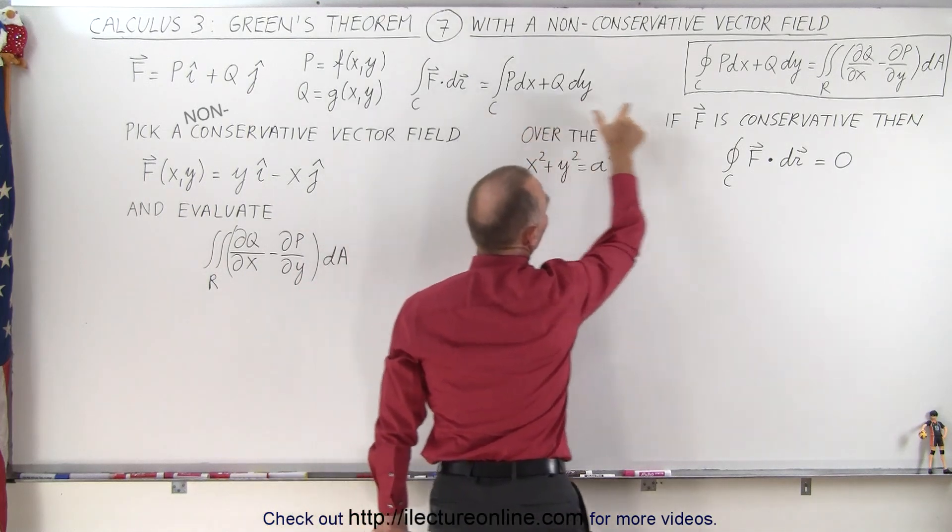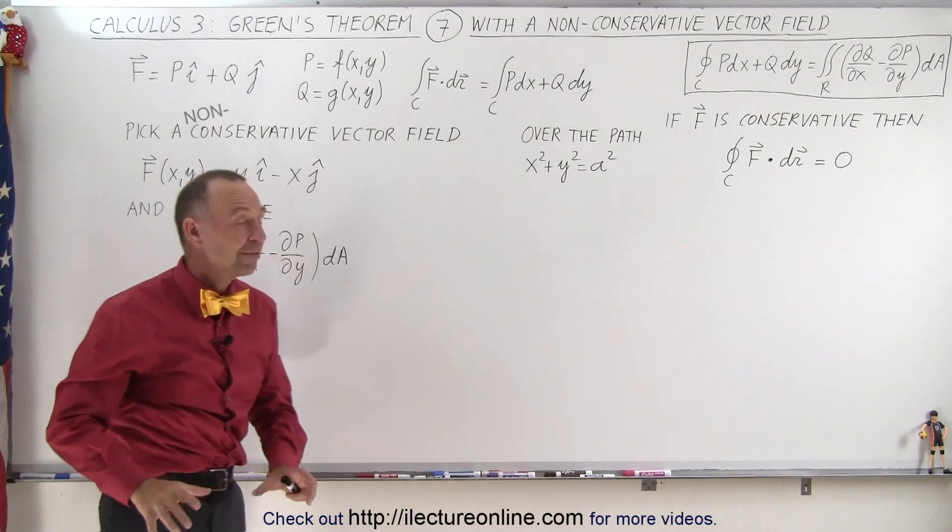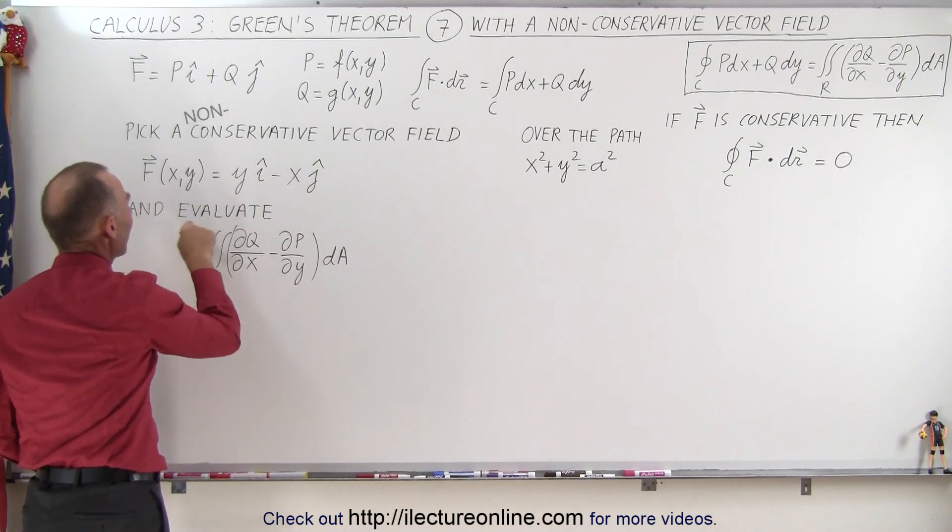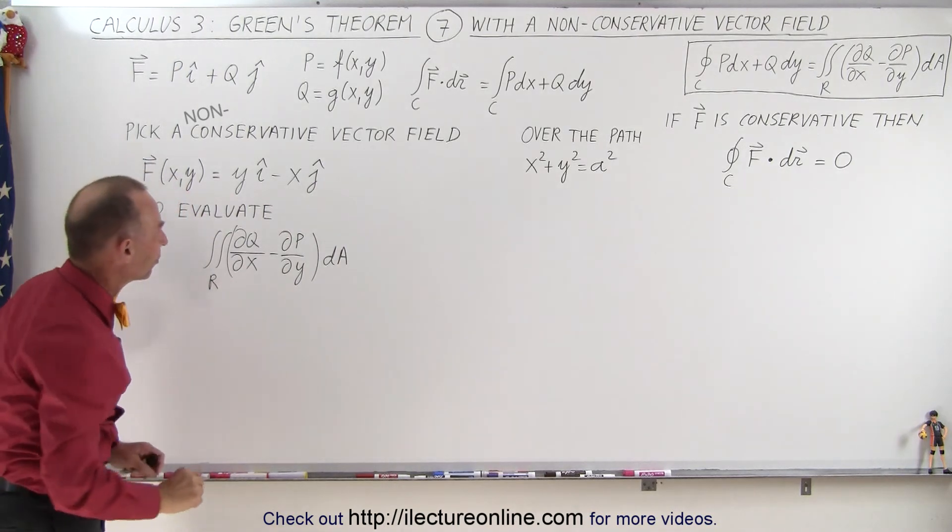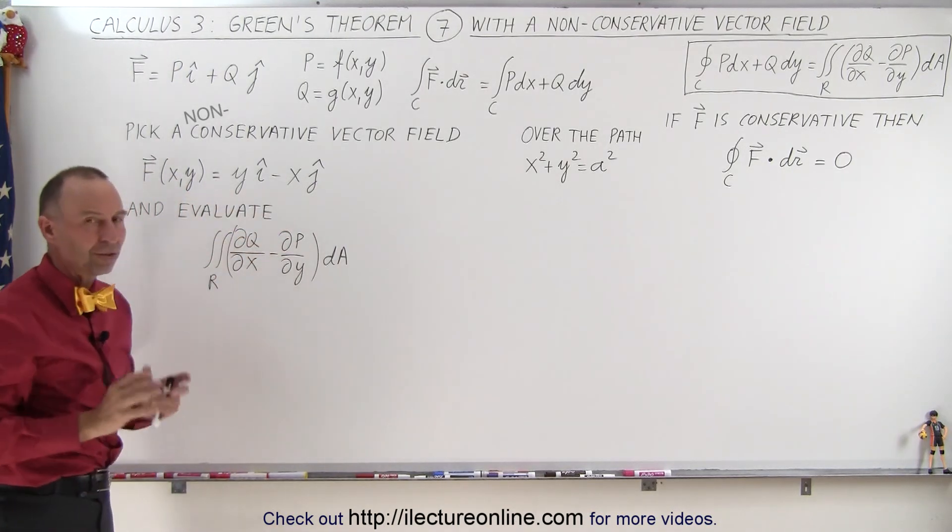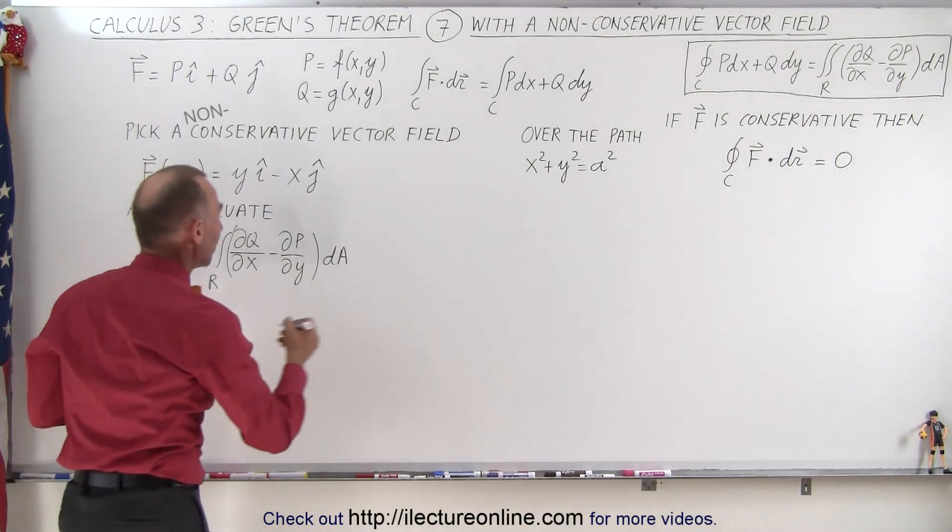So now having a non-conservative vector field, we're going to evaluate the right side of Green's theorem. Let's see what happens in this case because this is kind of a special type of non-conservative vector field. So let's go ahead and plug in what we know.